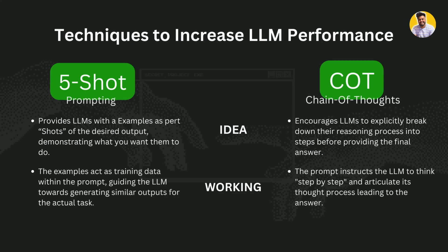5-shot prompting works like this: the examples act as training data within the prompt, guiding the large language model toward generating similar output for the actual task. But in chain of thought prompting, the prompt instructs the large language model to think step by step and articulate its thought process leading to the answer. This reveals the reasoning behind the answer, increasing transparency and potentially improving accuracy.